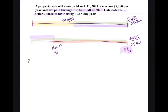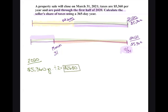For 2020: the seller owes half the year. $5,360 ÷ 2 = $2,680. That handles the 2020 portion. Now for 2021, we need the seller's portion — January 1st through March 31st, since closing is March 31st and the seller owned it up to that date.